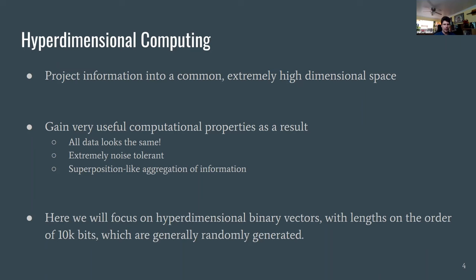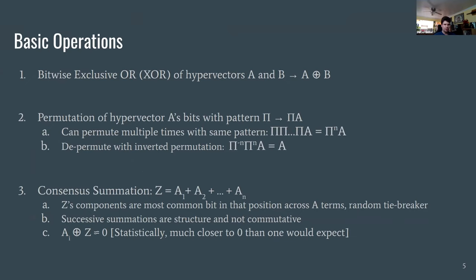Basic operations include the exclusive XOR on the bits of two hypervectors, and permuting the bits of a hypervector in a particular pattern which can be applied repeatedly. The permutation pattern is denoted as π and applied to a hypervector A; repeated application is expressed as a power, and you can depermute it by reversing the permutation pattern, represented as a negative power.